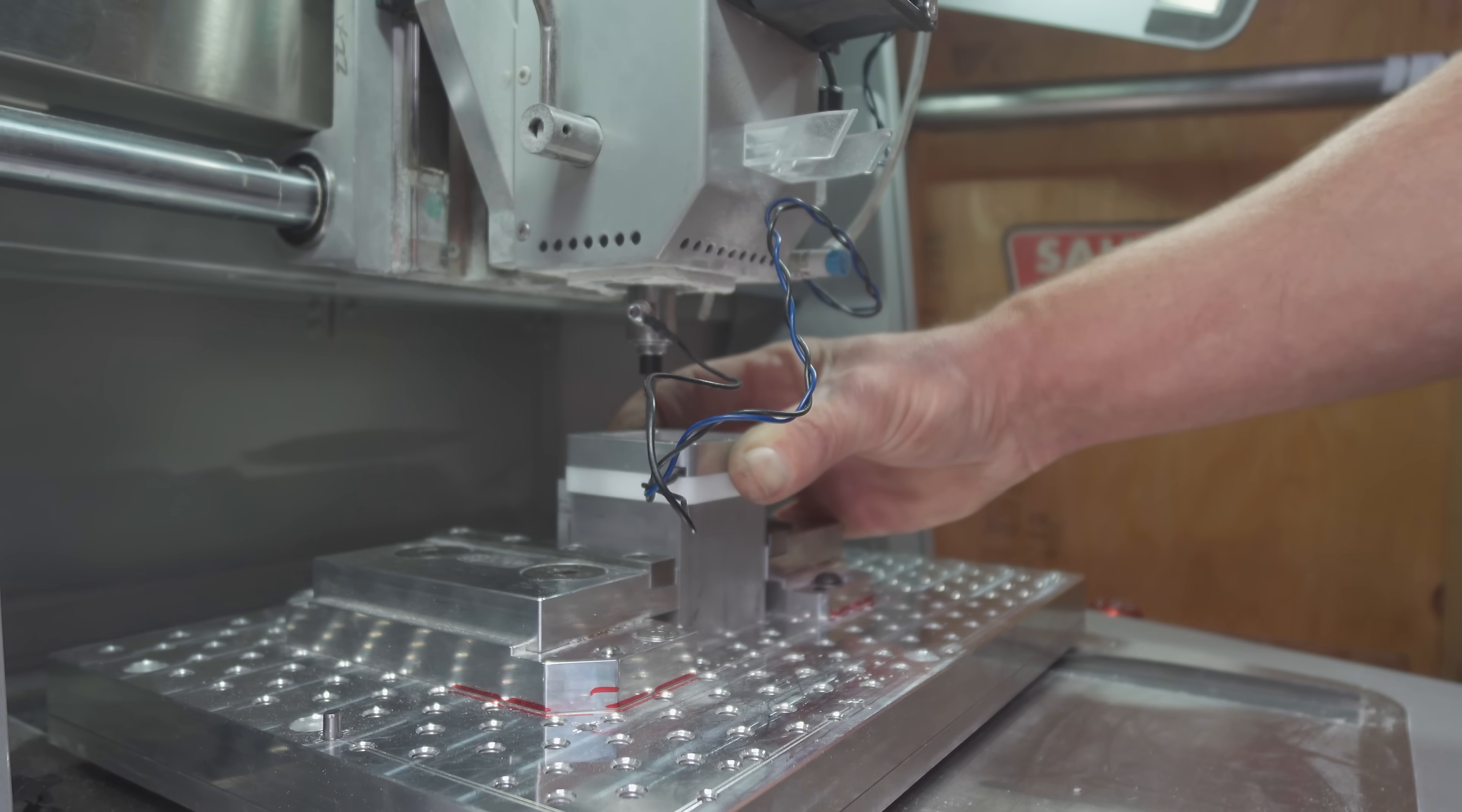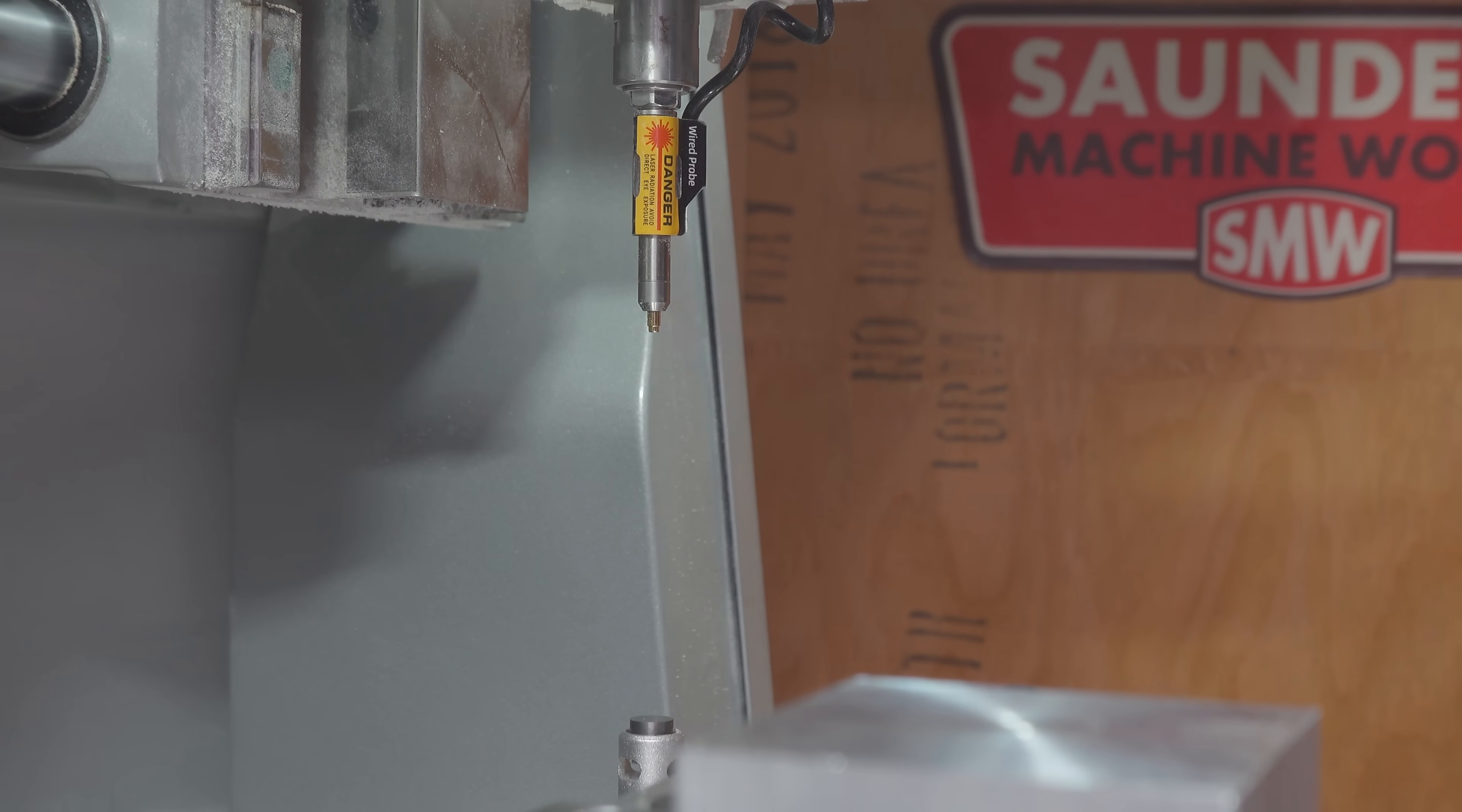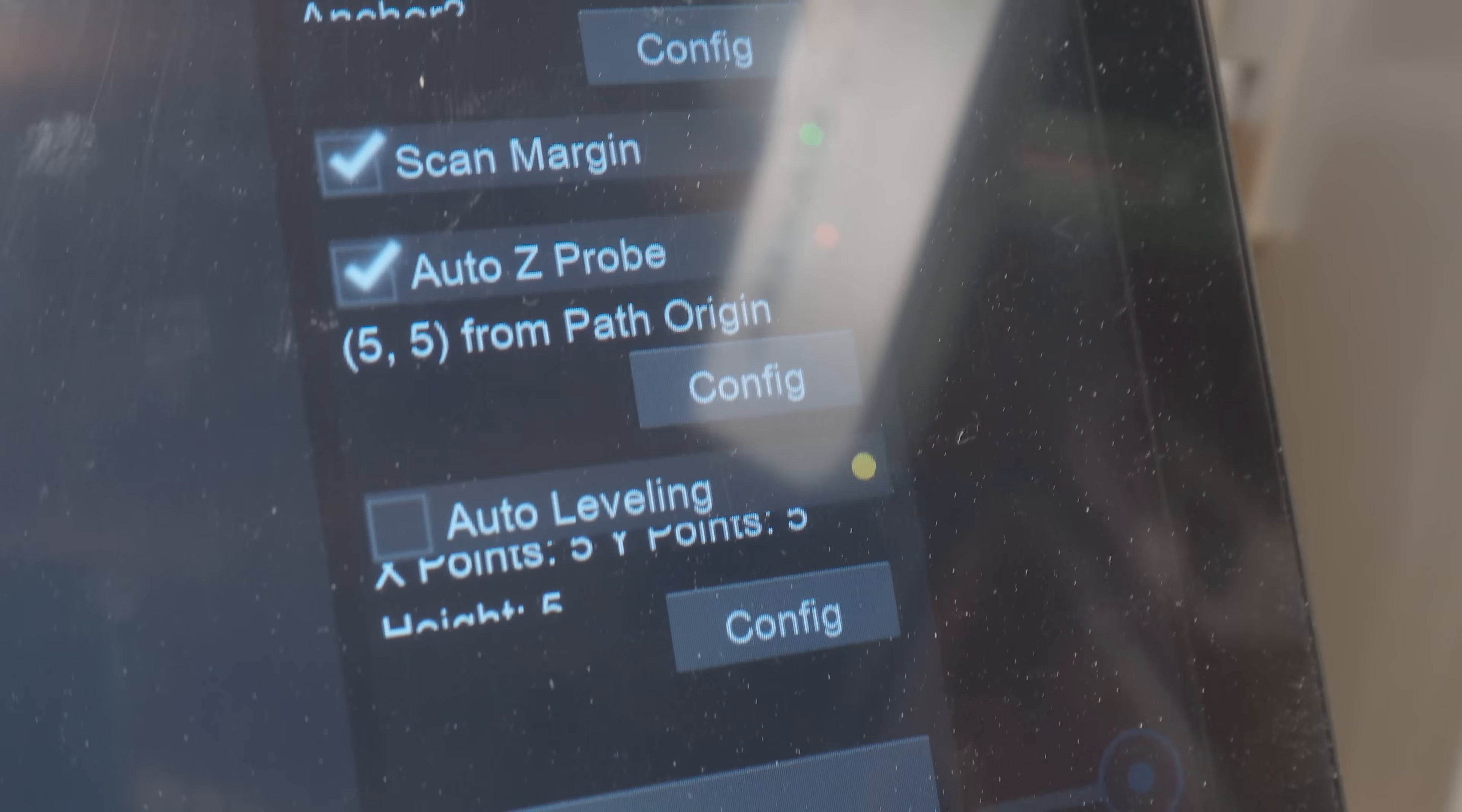The origin is remembered through power cycling, so if you do multiple parts or operations in the same orientation, it will be ready to run. The unit also has a Z-height probe with a laser that will trace out the work as a nice sanity check to make sure that everything's aligned before we hit go. With all that out of the way, all that's left to do is send it.